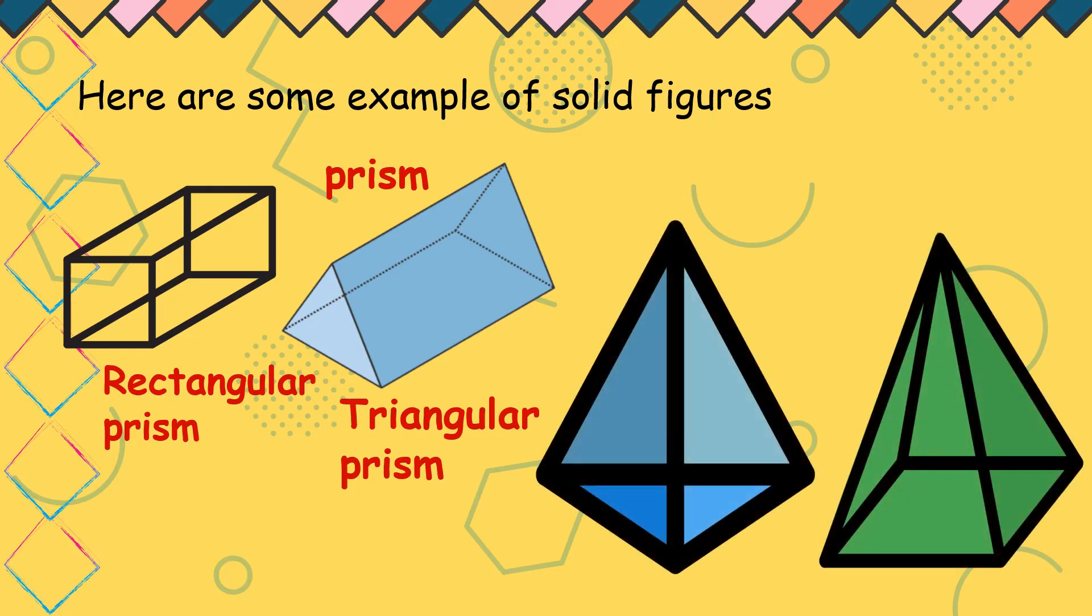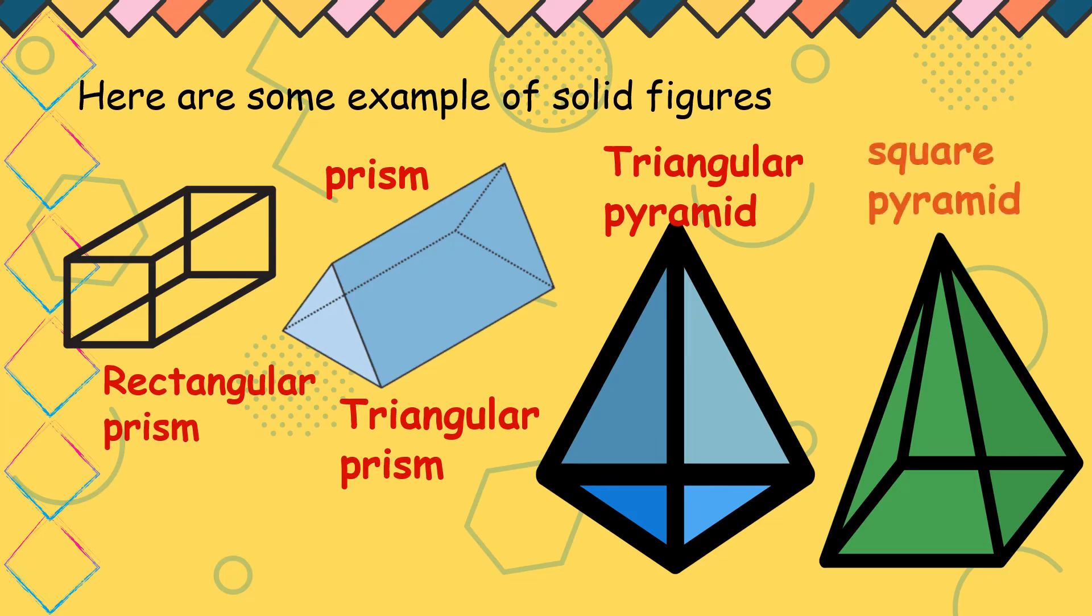Next, pyramid tayo. Example natin ng pyramid. Again, tignan natin yung base o yung pinakababa. Dahil yan ay square na base, yung una ay triangular pyramid. The second one, ang base ay square. It is called square pyramid. Yan yung different kinds of pyramid.